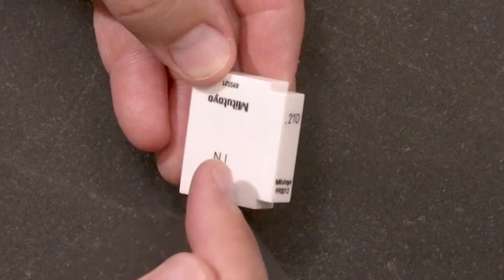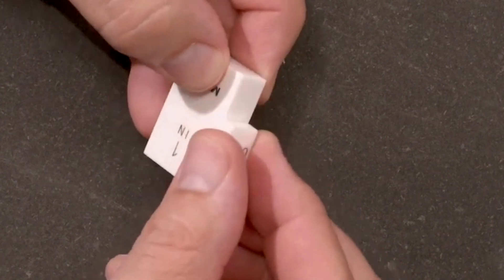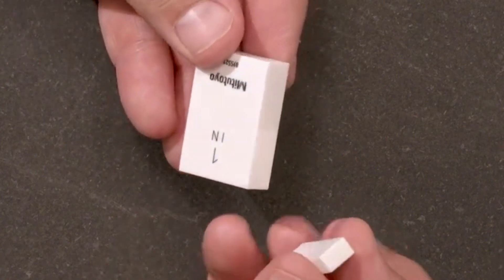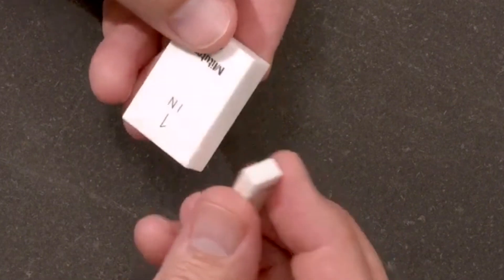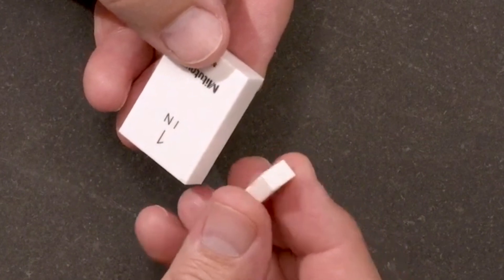When you're all done using the rung gauge blocks, you can just slide them back apart like this. If you leave the blocks wrung together for, say, several days or more, it can become very hard to take them apart. So don't leave them wrung for too long.